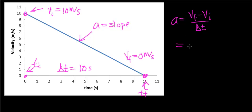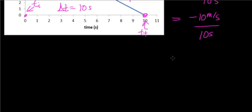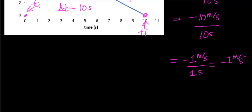The acceleration is going to be zero meters per second minus 10 meters per second, divided by the time it takes to change that velocity — in this case, 10 seconds. That gives negative 10 meters per second divided by 10 seconds, which simplifies to negative 1 meter per second per second, or negative 1 meter per second squared.